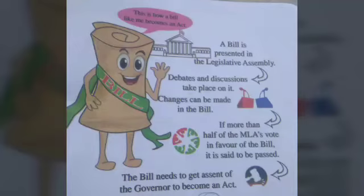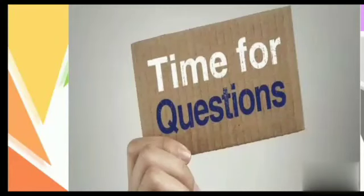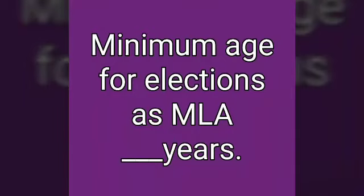A bill is presented in the legislative assembly, where debates and discussions take place and changes can be made. If more than half of the MLAs vote in favour of the bill, it is said to be passed. The bill then needs to get the assent of the governor to become an act.